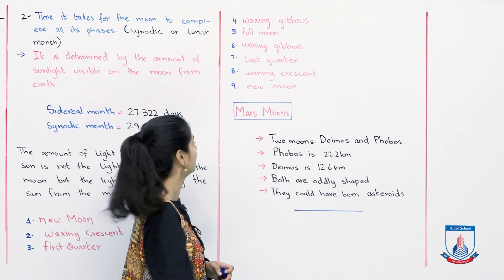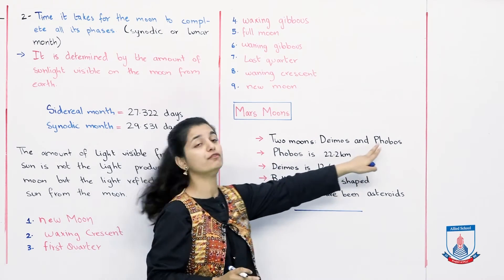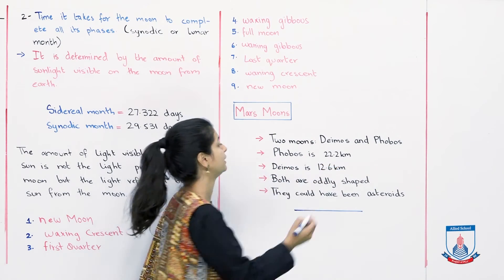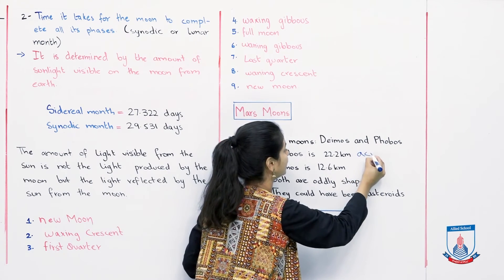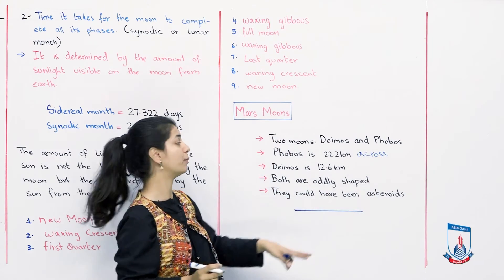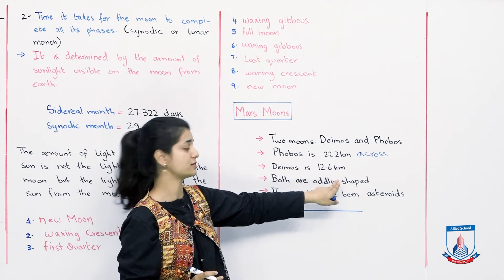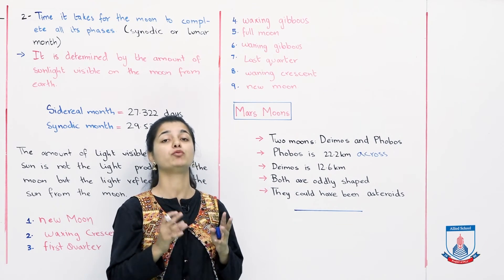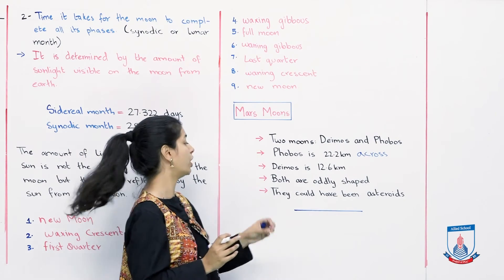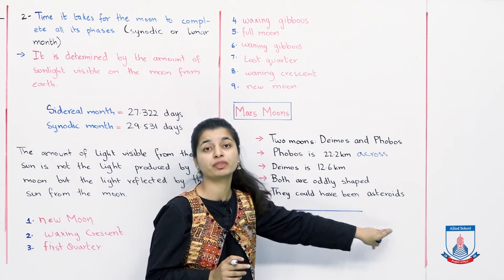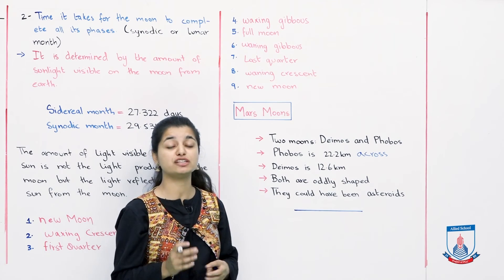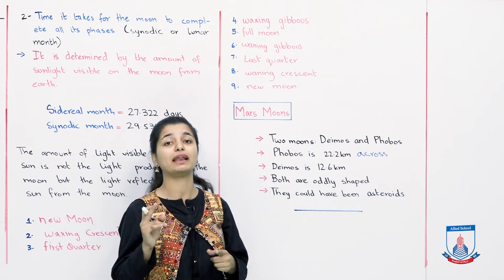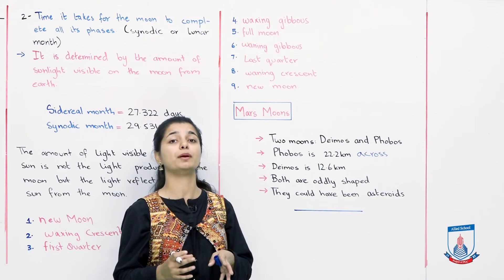Next, hum padhte hai Mars ke moon ke baare mein — two moons hote hain Mars mein: Deimos and Phobos. Hamaara ek moon hai, lekin Mars ke do moons hai. Phobos is 22.2 km across — matlab its ki overall jo width hai that is 22.2 km — aur Deimos ki 12.6 km. Ab hamaara jo moon hai that is relatively spherical, lekin yeh jo do moons hai bilkul oddly shaped hain, inki koi bhi proper shape nahi hai, idhar udhar se irregular hai. Aur khaas baat ye hai ki they could have been asteroids — yeh possible hai ki yeh kya hote se pahle asteroids, yani jo space mein rocks hote hai, yeh bhi wahi hote the. But eventually, kyunke ab suraj ki light reflect kerte hai aur planet Mars ke irdgird ghoomte hai, they have now become moons.